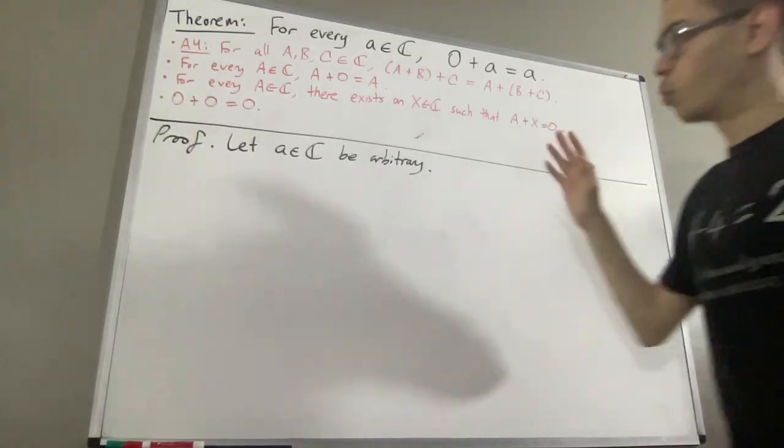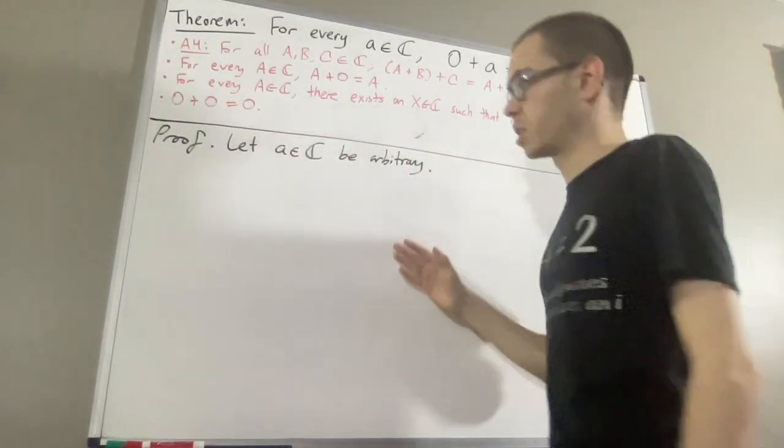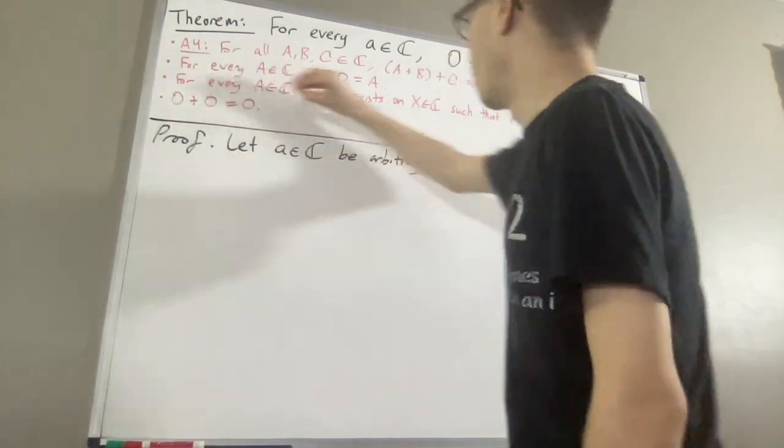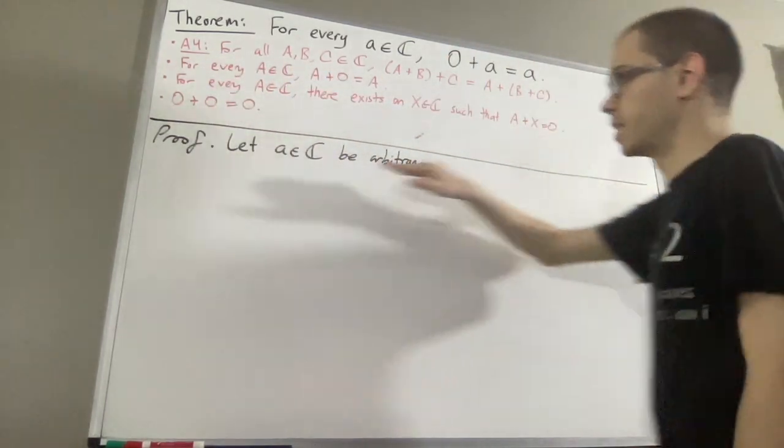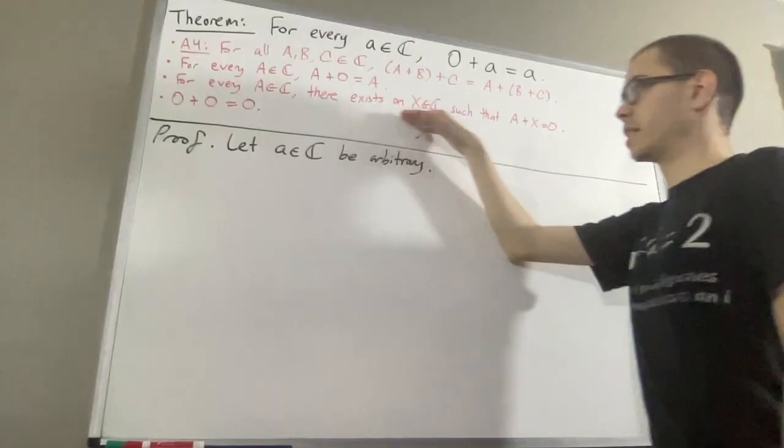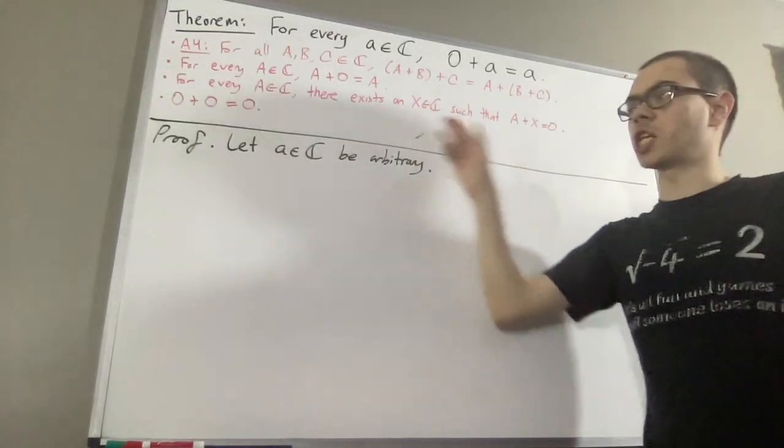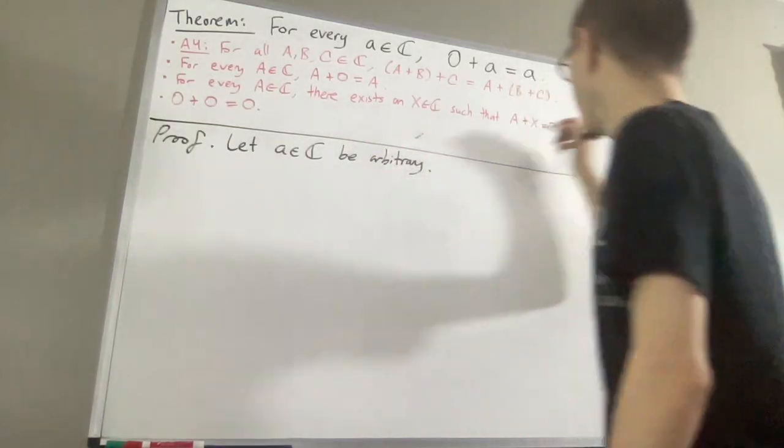And so the way we proceed is as follows. Applying this third result, since a is a complex number, there must exist a complex number x, such that a plus x is equal to 0. I'll call this result star.